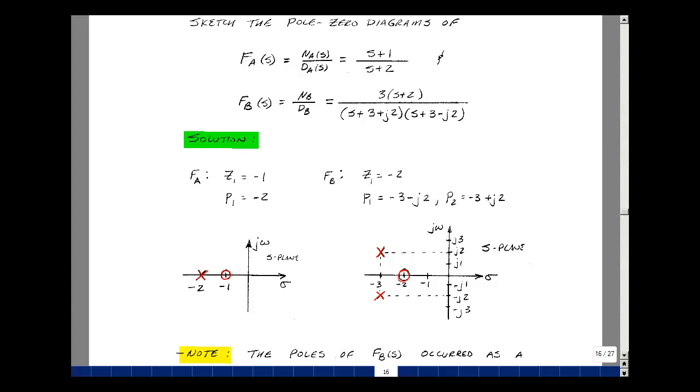For our second function f_b, the numerator goes to zero when s equals -2. Put that right here as a zero. Now our denominator, this first term goes to zero when we have the opposite sign here, in other words, -3-j2. Here's the real part of -3, and then here's -j2. The second term in the denominator goes to zero when we have s equals -3+j2. Here's -3 and then +j2. So this is a visualization of the poles and zeros of our ratio.